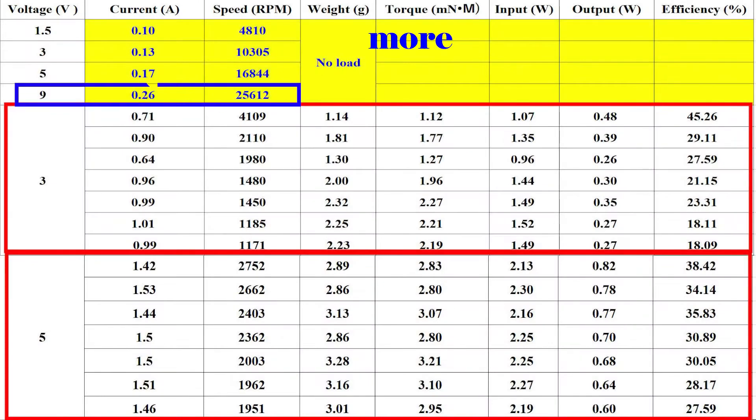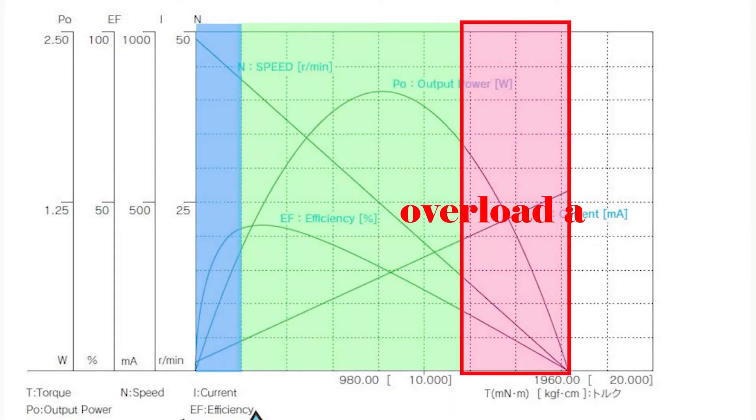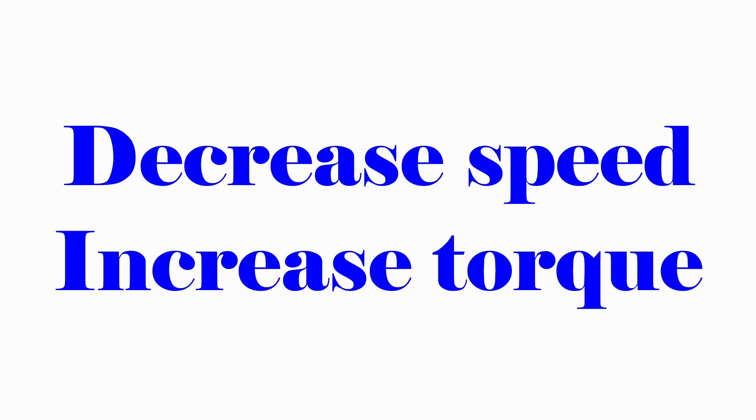It will be more powerful if we apply a higher voltage. We found that even when the friction force is small, the motor already works near the overload condition. The words decreased speed and increased torque are correct, but it is not good for this situation.